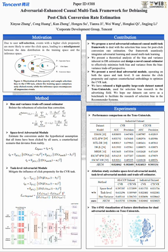Specifically, we firstly conducted bias and variance analysis on existing DR estimators and found that inaccurate estimation of either component leads to an increase in the upper bound of conversion rate estimation generalization, resulting in a decrease in the accuracy of conversion rate estimation. To tackle this, we proposed a joint optimization of the bias and variance terms.